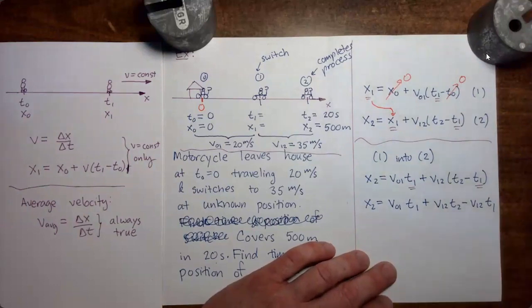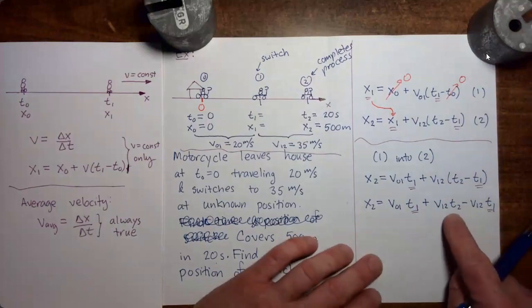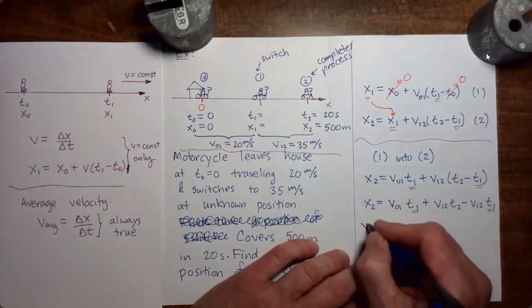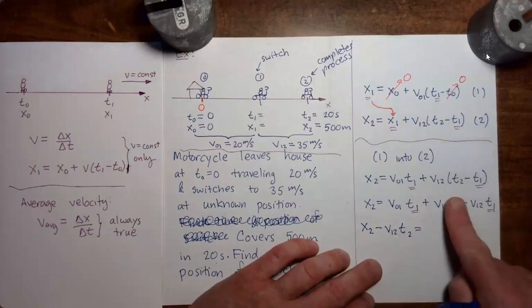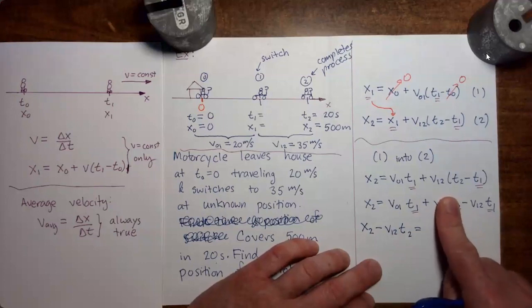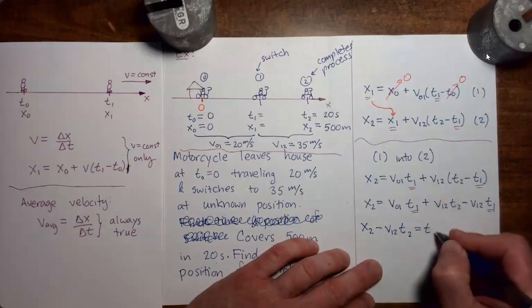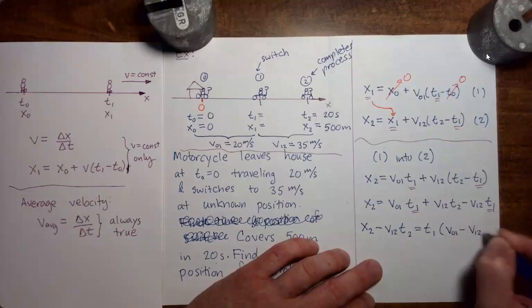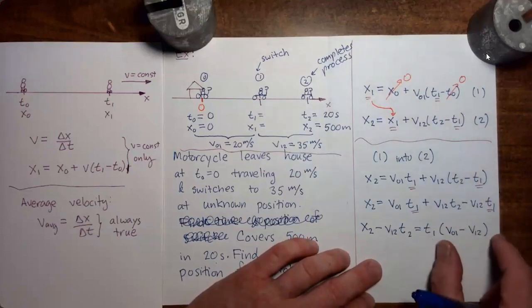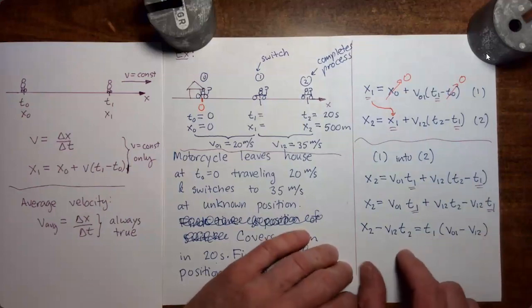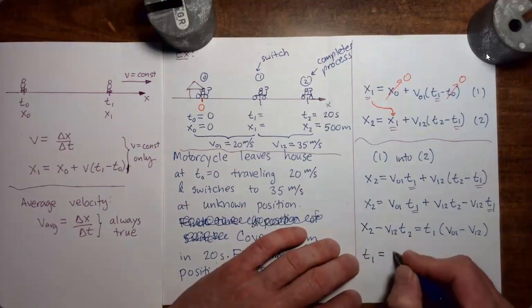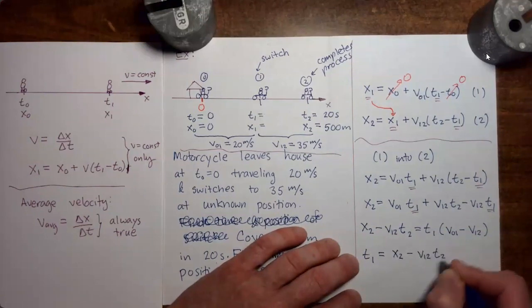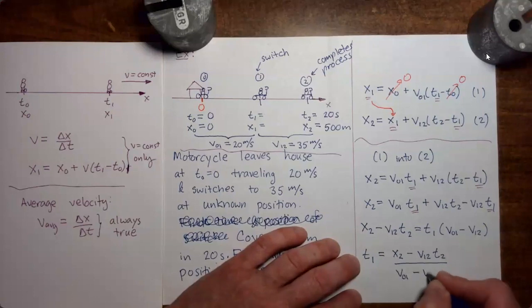Notice two terms that have t1, so let's group those. Take the v12 t2 term and move it to the left where it picks up a minus sign, giving x2 minus v12 t2 on the left. The remaining two terms both have t1, so factor it out: t1 times (v01 minus v12). Now solve for t1 by moving that factor to the denominator, switching sides: t1 equals (x2 minus v12 t2) all divided by (v01 minus v12).